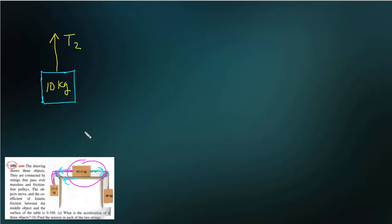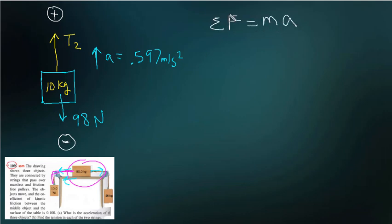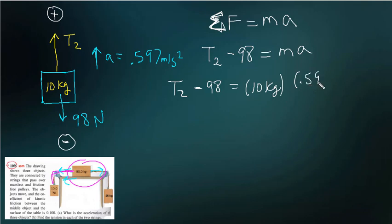It's being pulled up with a tension T2 and is being pulled down to the earth with a force of 98 newtons. And the tension is winning because it is accelerating up at that moderately slow rate of 0.597. And it doesn't matter what you call positive or negative as long as you are consistent. So let's stick with the standard up as positive. Total force equals mass times acceleration. T2 minus 98 equals M A. We're looking for T2. So we know everything else. T2 equals 98 plus 5.97 or 104 newtons.